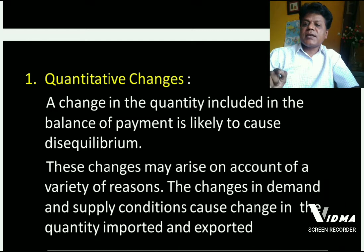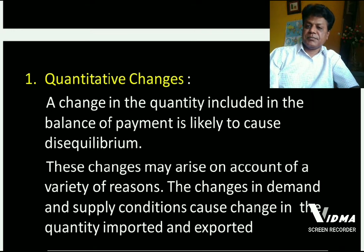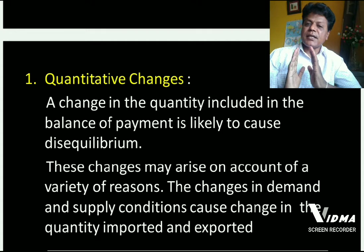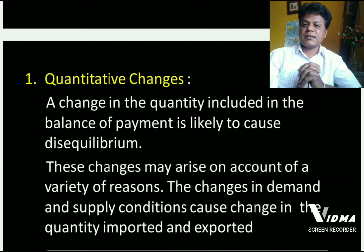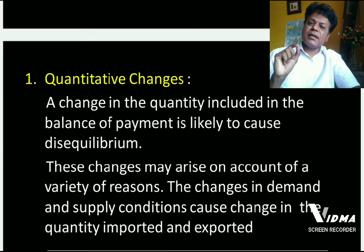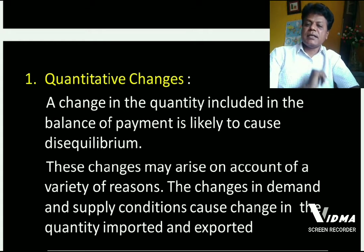A change in the quantity included in the balance of payment is likely to cause disequilibrium. Whatever quantities we are importing and exporting, if there is any change in these import and export quantities, that will definitely cause disequilibrium in the balance of payment — it will either be surplus or deficit.